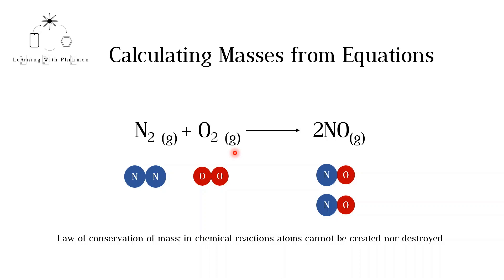According to the law of conservation of mass, in chemical reactions, atoms cannot be created nor destroyed. Therefore, if you start with two nitrogen atoms and two oxygen atoms, you must end up with two nitrogen atoms and two oxygen atoms. There is no change in the number or types of atoms. The atoms have simply rearranged, forming a new molecule.